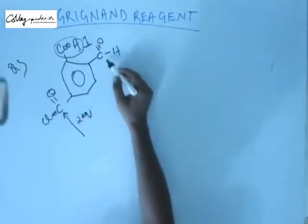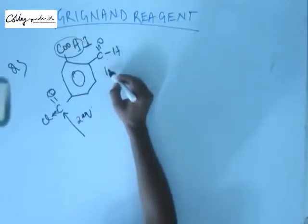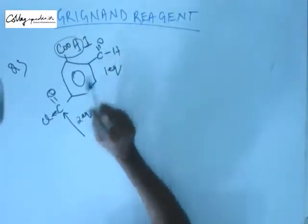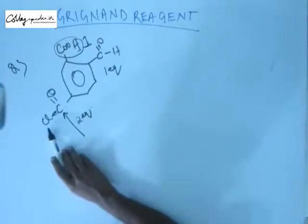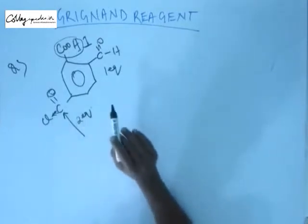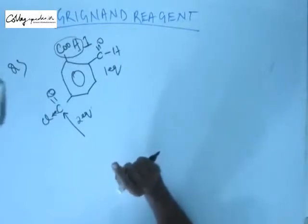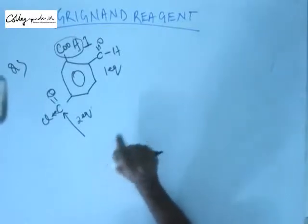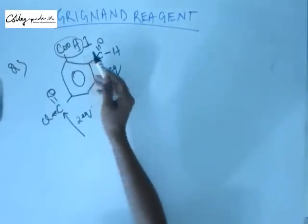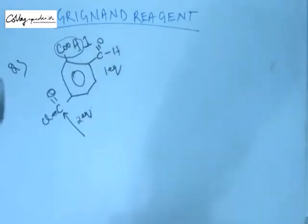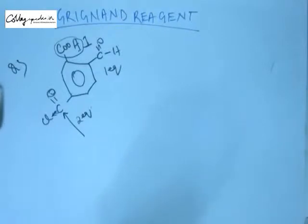The aldehyde will consume one equivalent of Grignard reagent because there is no attached leaving group as in acyl chloride — the C=O double bond is not reformed after the first attack. So the carboxylic acid consumes one equivalent, the aldehyde consumes one equivalent, and the acyl chloride consumes two equivalents. The whole substrate is going to consume four equivalents of Grignard reagent.